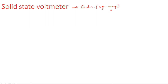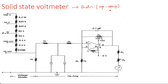Coming to the circuit diagram, the entire circuit is divided into two sections: the voltage divider section and the operational amplifier section. If you observe the multi-range series type voltmeter, there are cascaded connections of multiplier resistors in series with the meter. Here also, the voltage divider network represents the same similar structure.